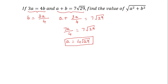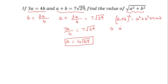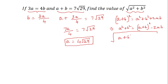Now let us look at the term square root of a squared plus b squared. We know the formula that a plus b whole squared is equal to a squared plus b squared plus 2ab. This implies a squared plus b squared is equal to a plus b whole squared minus 2ab. So within the square root, I can replace a squared plus b squared with a plus b whole squared minus 2ab.